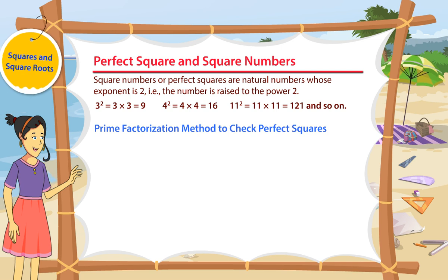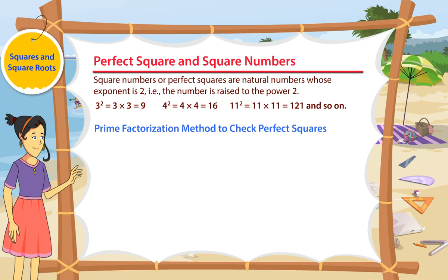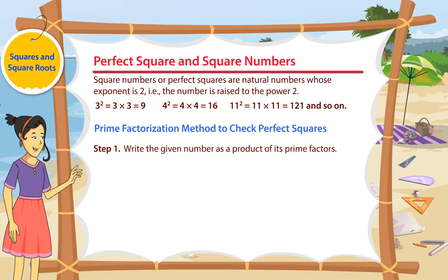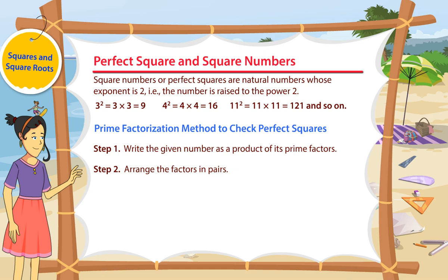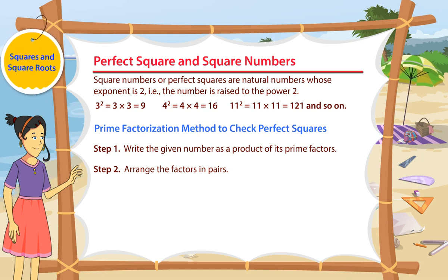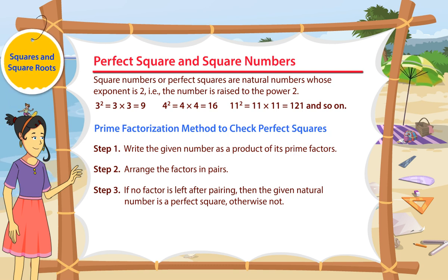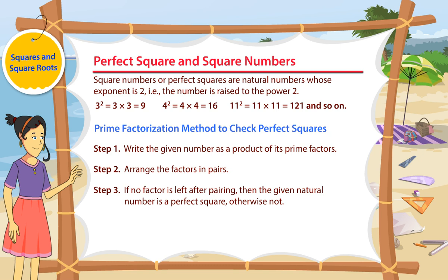Prime Factorization Method to Check Perfect Squares. Following are the steps to check whether a given natural number is a perfect square. Step 1: Write the given number as a product of its prime factors. Step 2: Arrange the factors in pairs. Step 3: If no factor is left after pairing, then the given natural number is a perfect square, otherwise not.